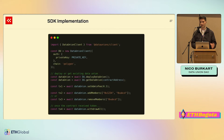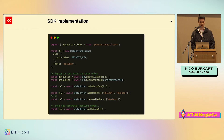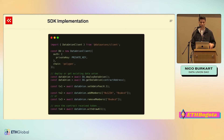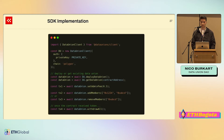We have the smart contract and we have the SDK. The SDK enables you to interact very easily with the contract. It's just an NPM package and really just a few lines of code. The main interactions with the contract are: you can deploy the data union with the SDK, set the admin fee, add members, remove members, and also withdraw your tokens.